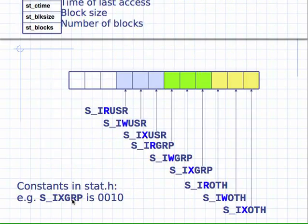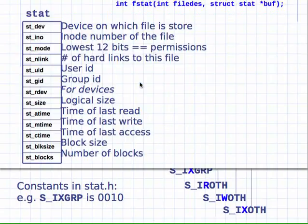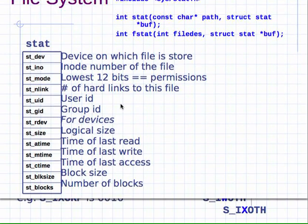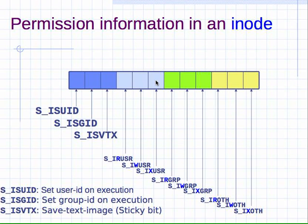Looking at some details: the `st_mode` field of the `struct stat` uses 12 bits total. Nine bits are for read, write, and execute permissions — for others, group, and owner — just like the output of `ls -l`. Then there are additional bits, for example the set-user-ID-on-execution bit.